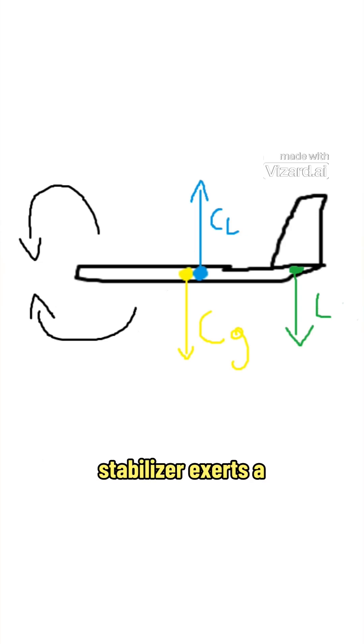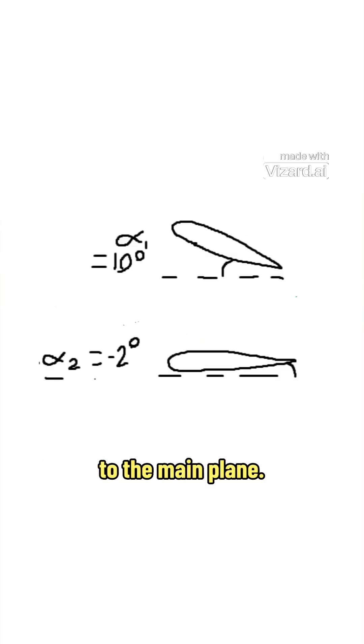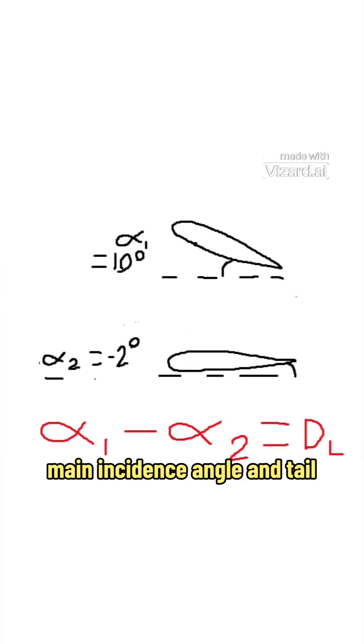To correct this, the horizontal stabilizer exerts a counteracting downwards force through having a lower angle of incidence compared to the main plane. The difference between the main incidence angle and tail incidence angle is called longitudinal dihedral.